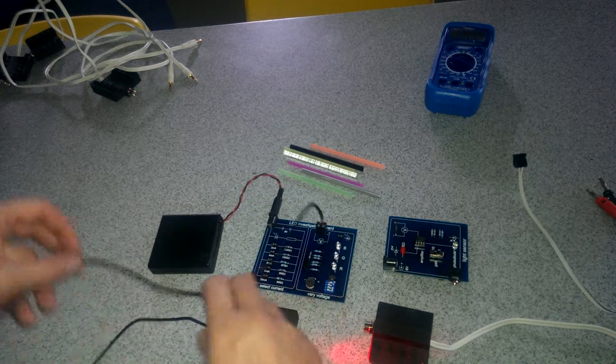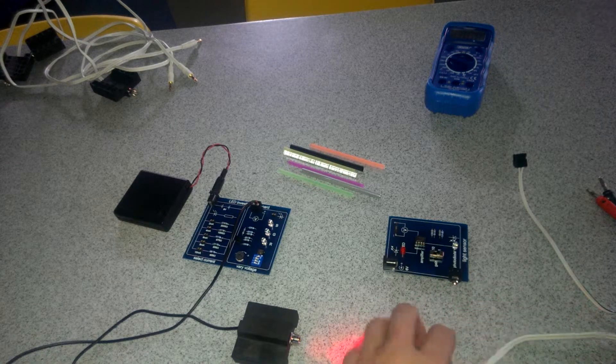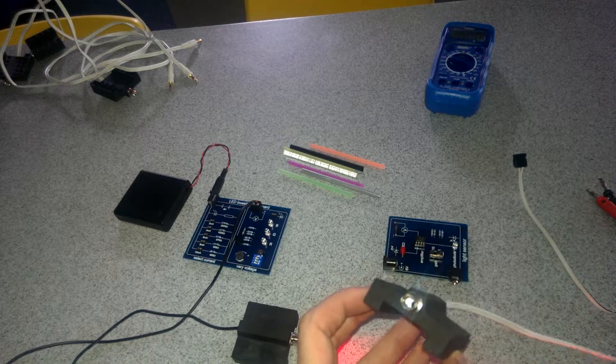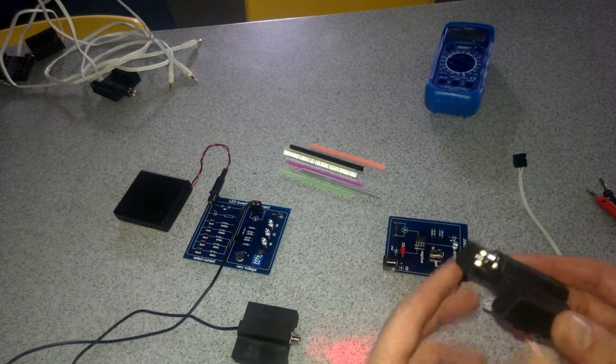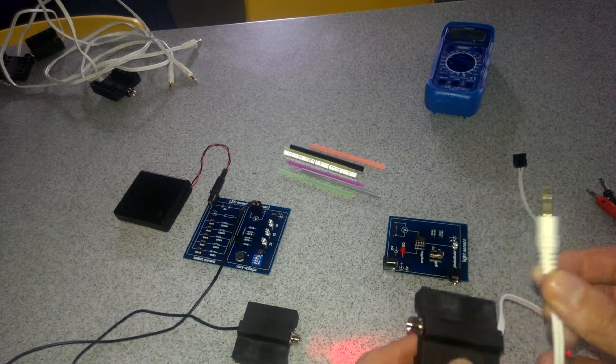That's the first part set up for the moment. For the other half what you're going to use is this. This looks very similar to your LED but in fact it's the opposite. It's a receiver whereas the other one is an emitter, and it's attached to a white cable with what looks like a headphone jack on the end.